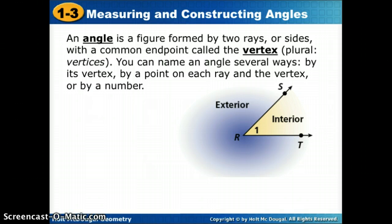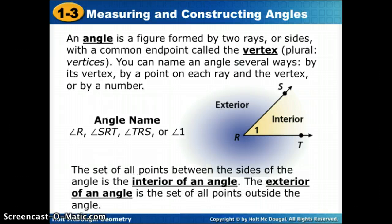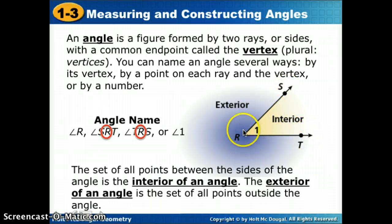Now you can name an angle in many ways. The first way is to name it by its vertex, so I could call this angle R because its vertex is R. I could also name it by its three points, SRT or TRS, or if there's a number written on the inside, I can call it angle 1. It's important to notice when we use three letters to name our angles that the middle letter will always be the vertex. So this angle could not be TSR. R must be in the middle.